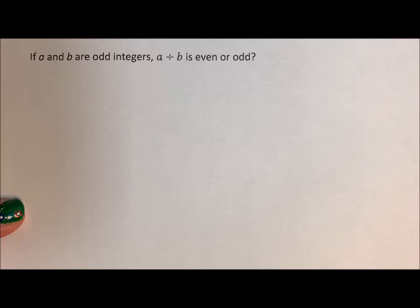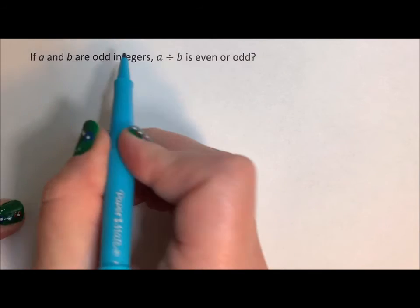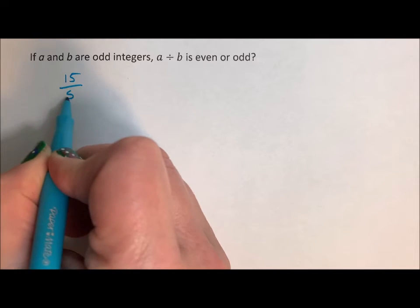And my suggestion, take the theory, make it concrete. So let's see. They're both odd. Okay, well 15 divided by 5 is 3.